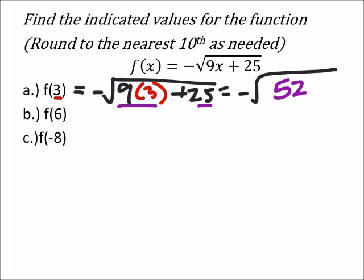I put a negative square root of 52, and it gives me f of 3 equals negative 7.2, rounded to the tenth.